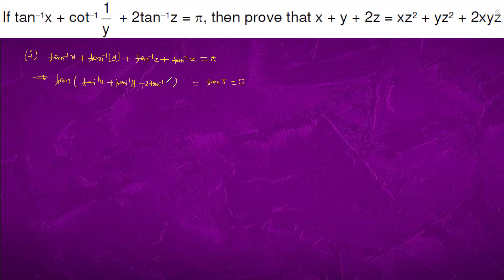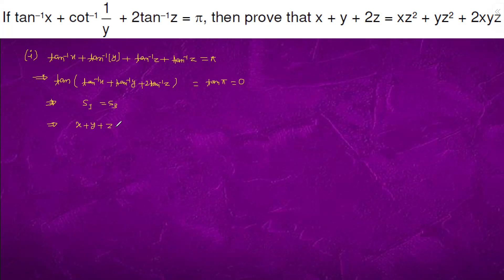So this gives us S1 minus S3 equals to 0, which means S1 equals S3. In S1 we have x + y + z terms, so we have x, y, z.